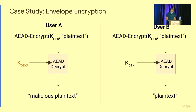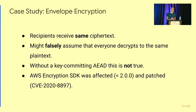To summarize this example: both recipients see exactly the same binary blob, and therefore might falsely assume that if they both decrypt this ciphertext, they will end up with the same content. However, if you have an authenticated encryption scheme which is not key committing, this is not the case. One example we found was the AWS encryption SDK, which before version 2.0 was vulnerable to this and has been patched since then.